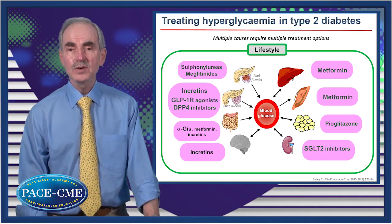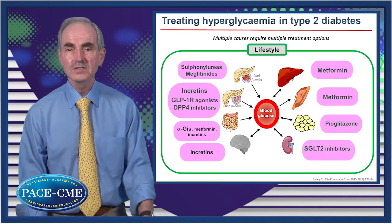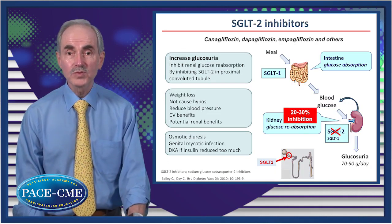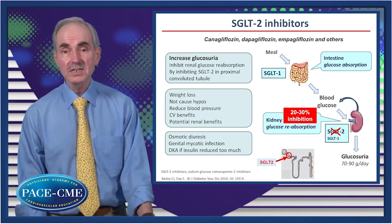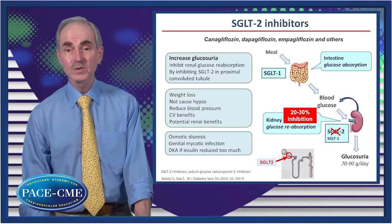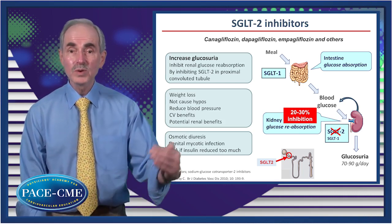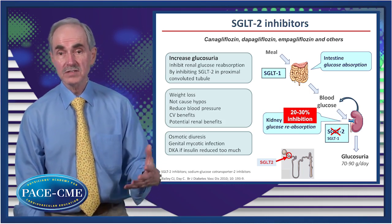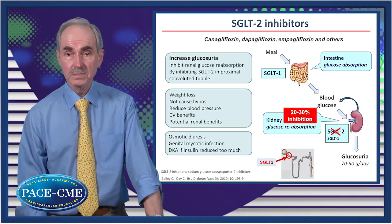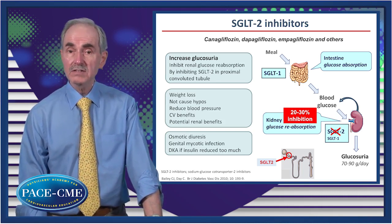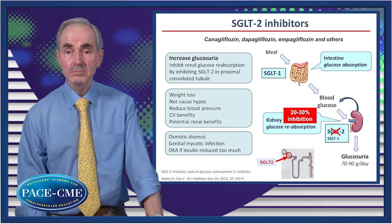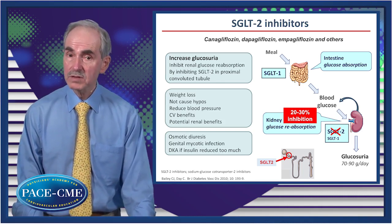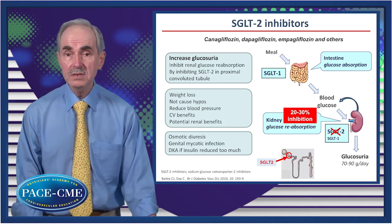Turning to the kidney, we have the SGLT2 inhibitors — the glucosuric agents — which suppress the reabsorption of glucose from the proximal tubule, creating perhaps 70–90 grams of glucose excreted in the urine. This not only lowers hyperglycemia in an insulin-independent way but also lowers weight through caloric loss and may create an osmotic diuresis, which likely contributes to its blood pressure-lowering effect. Like metformin and GLP-1 receptor agonists, SGLT2 inhibitors have potentially beneficial effects on major adverse cardiac events. There is also some evidence that pioglitazone can benefit major adverse cardiac events, though it does carry the risk of heart failure due to its edema component.